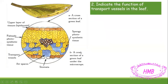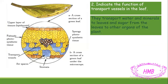Let's continue with the same picture. The second question: indicate the function of transport vessels in the leaf. 'Indicate' means I will mention without explaining why or how. So they transport water and minerals to leaves. Plants, in order to grow and survive, need to absorb water and minerals from the soil through the roots. This water and minerals must be transported or carried to the other parts.